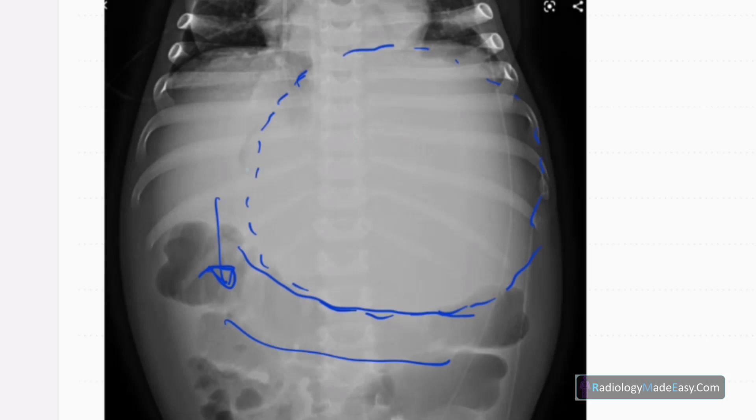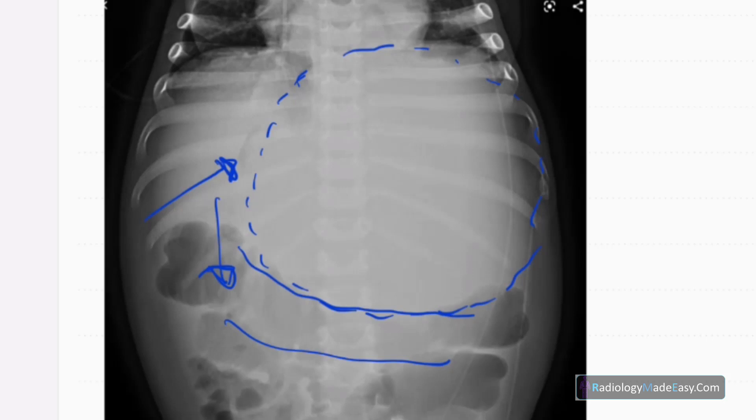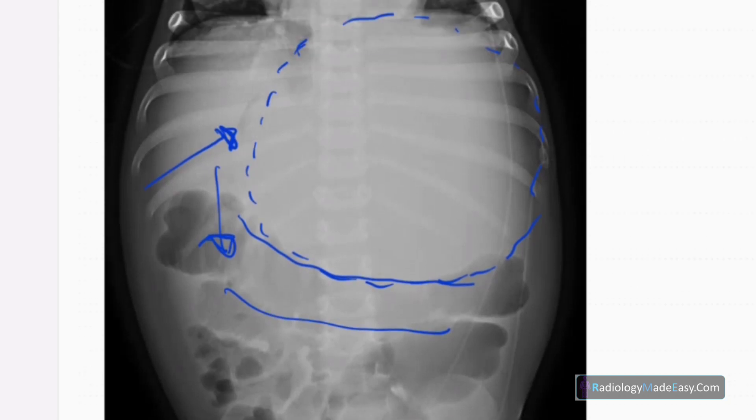And you can see some lucency on the right side. So this is probably the displaced stomach due to this mass. You can see the gastric bubble is displaced to the right side and compression of the stomach. So all the bowel loops are displaced inferiorly. Probably there is a mass in the left upper abdomen.